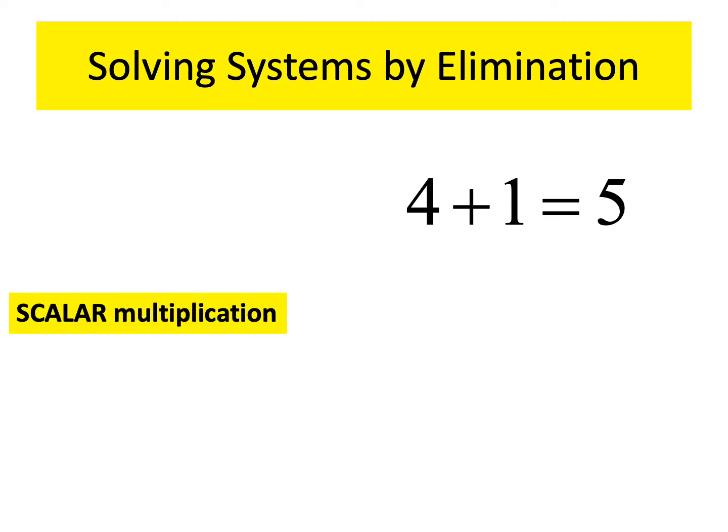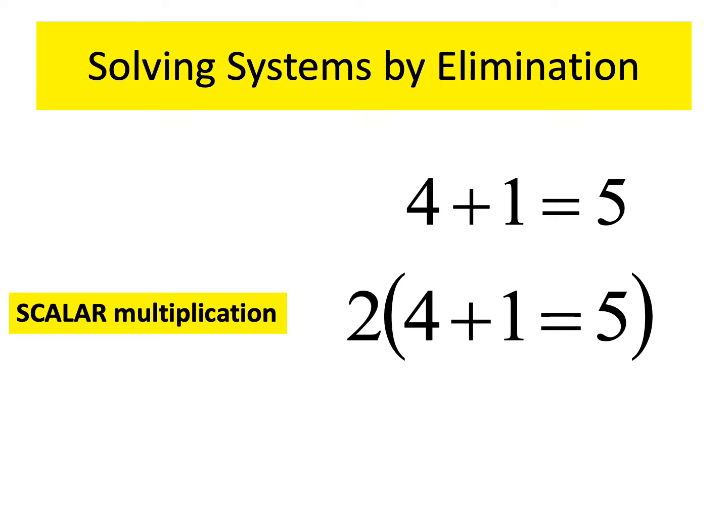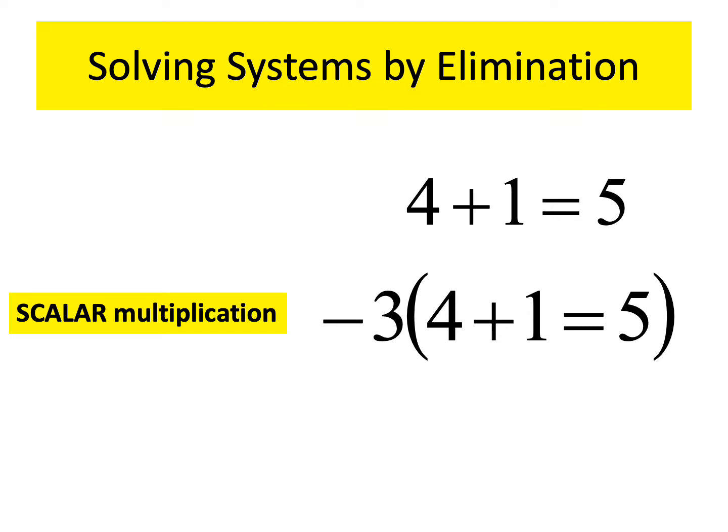So what happens when you stack the two equations and neither the x-coefficients nor the y-coefficients are exactly the same? I've got a 2 and a 7, a 15 and a 5 — adding or subtracting won't eliminate anything. Here's the new idea — a new technique called scalar multiplication. Starting with a true equation like 4 plus 1 equals 5, we scale everything by some factor, say 2, using the distributive property.